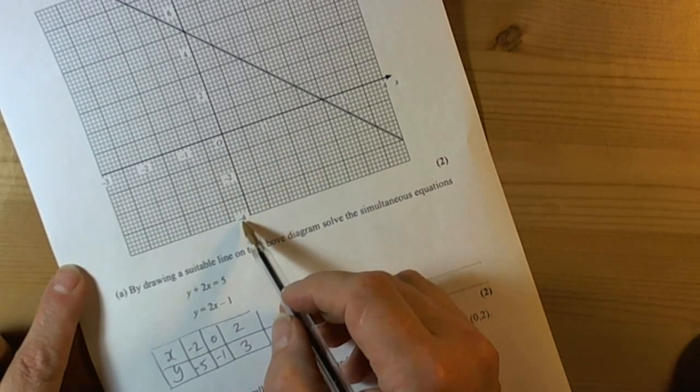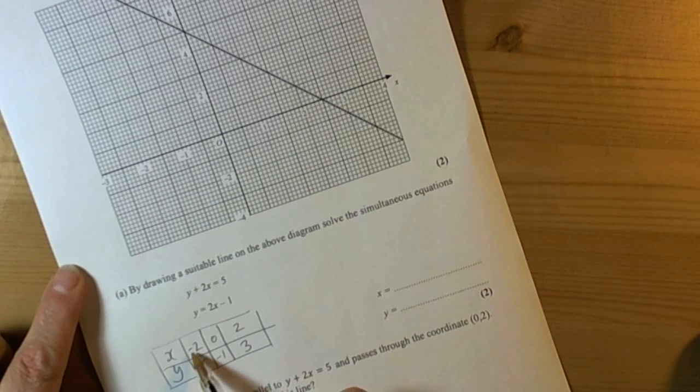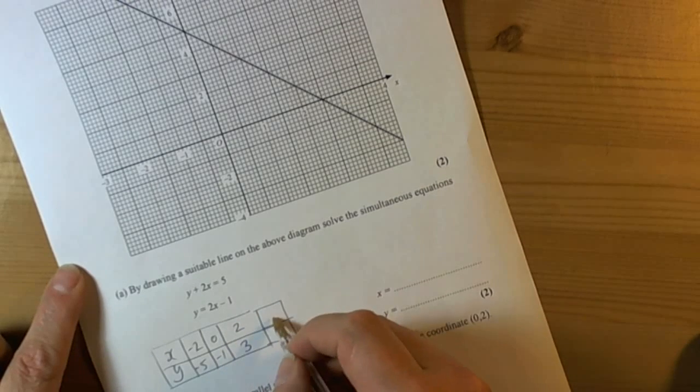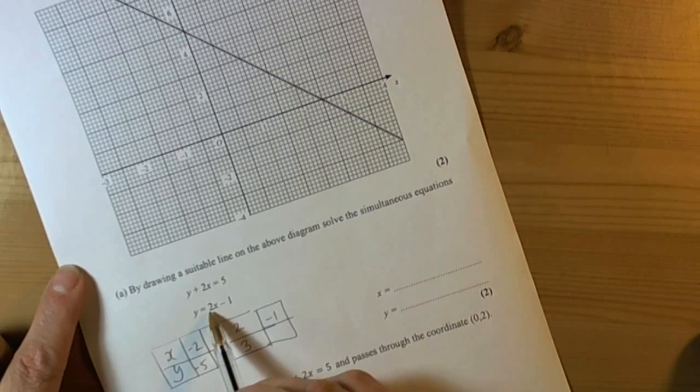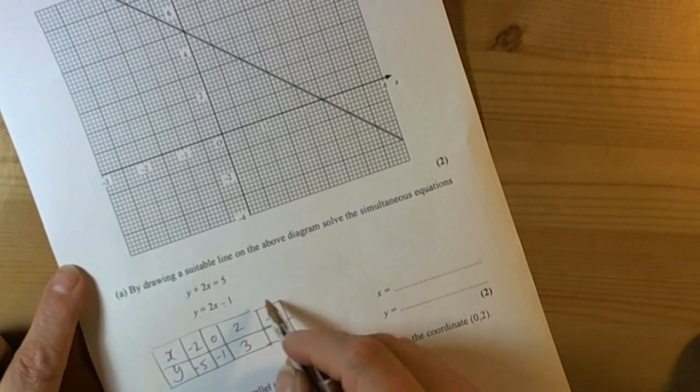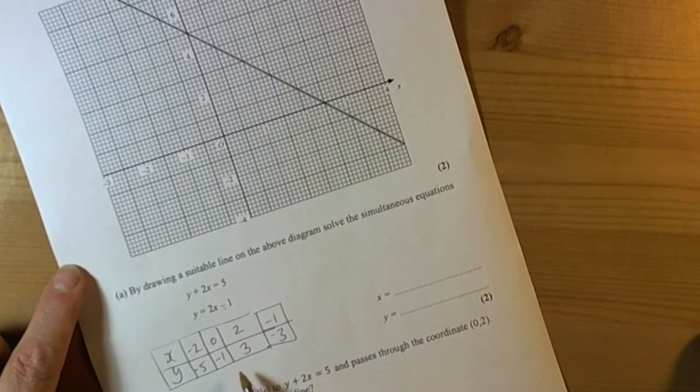We can see from the scale that we haven't got enough y on there, so using minus 2 isn't going to help us. Let's just use an extra one, minus 1. So double minus 1 we get minus 2, take away 1 is negative 3. So we could plot those coordinates.